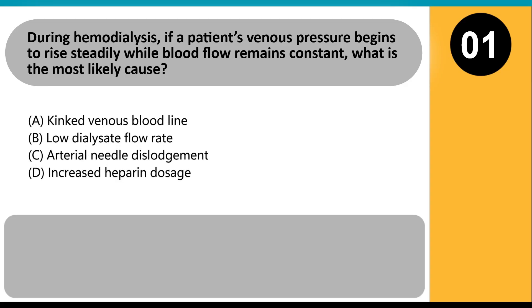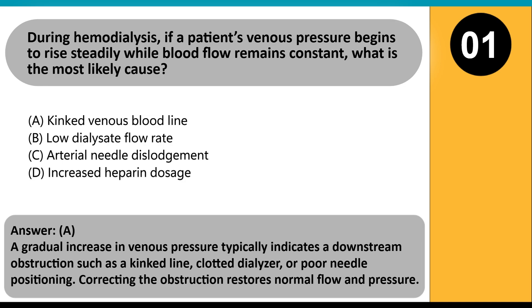During hemodialysis, if a patient's venous pressure begins to rise steadily while blood flow remains constant, what is the most likely cause? A. Kinked venous bloodline. B. Low dialysate flow rate. C. Arterial needle dislodgement. D. Increased heparin dosage. Answer A. A gradual increase in venous pressure typically indicates a downstream obstruction such as a kinked line, clotted dialyzer, or poor needle positioning.